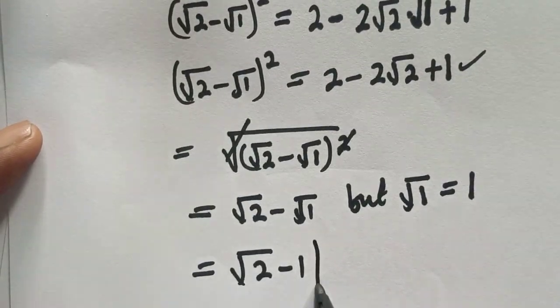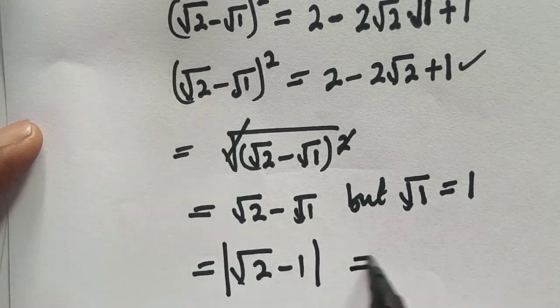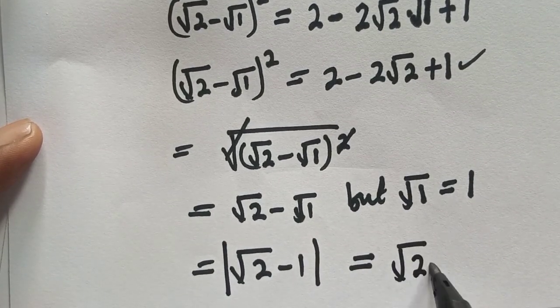So we need to get the absolute value of this. So this is equal to root 2 minus 1.